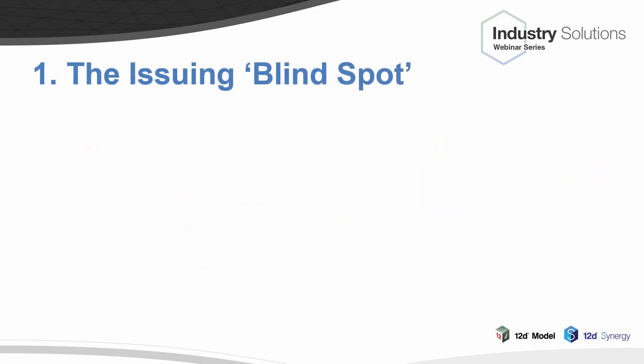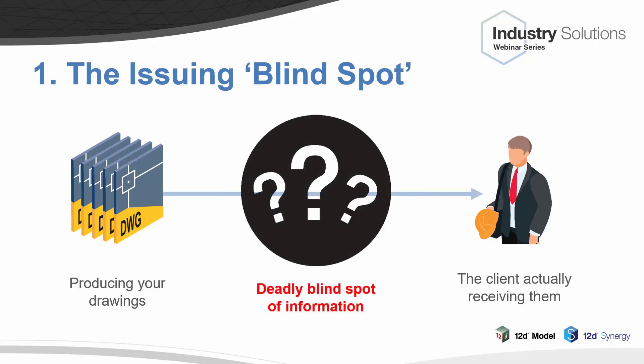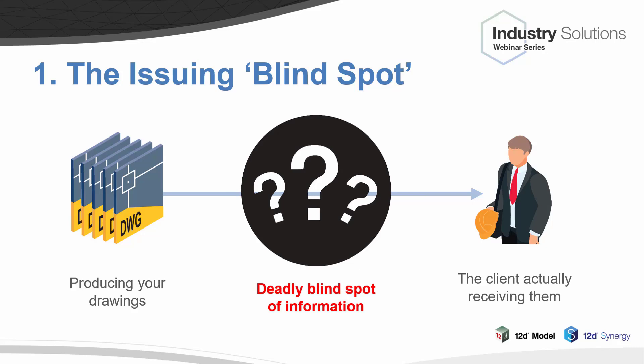There are two major issues with this workflow. The first is that between producing the drawings and the client actually receiving them, there's a major black hole of information - a deadly blind spot. There's no information, it's all unknown. This can really come back to bite you in a dispute because you don't have any information to back yourself up. You've all heard it before: 'I didn't receive that file.' A party can dispute that the wrong versions were sent, they were sent late, or they weren't received at all. You know you sent it, but you don't have any record to prove it - and this can mean disaster in a legal dispute.